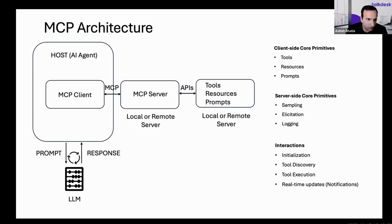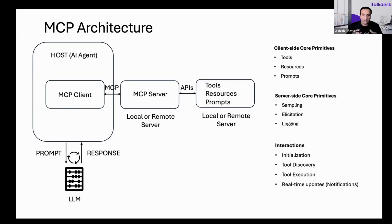Thanks for the explanation, Suresh. It looks like MCP has a lot of benefits. If you're a developer, it reduces development time and complexity — you're not adding glue code for every single integration over APIs. APIs don't go away with MCP. But if you're an AI agent builder, your agent has access to the whole ecosystem of tools. And if you're an end user, you have more capable AI agents.